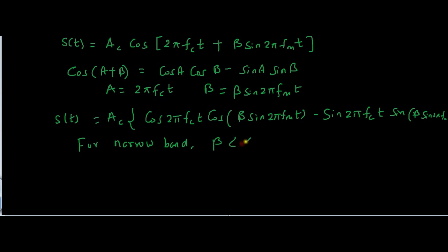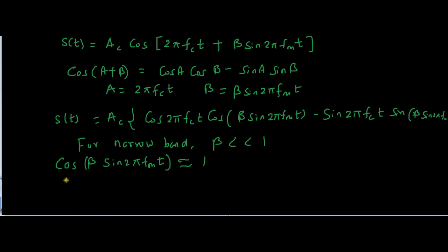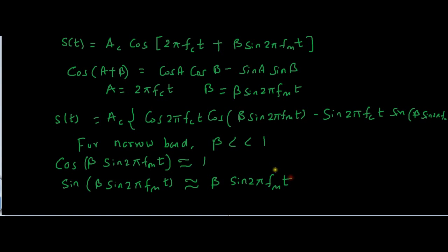For narrow band FM, β is much much less than 1. Therefore the product β·sin(2π fm t) is much much less than 1. So we can approximate cos(β sin(2π fm t)) ≈ 1, and sin(β sin(2π fm t)) ≈ β sin(2π fm t). We replace these terms in the equation accordingly.